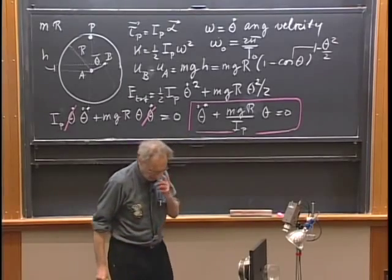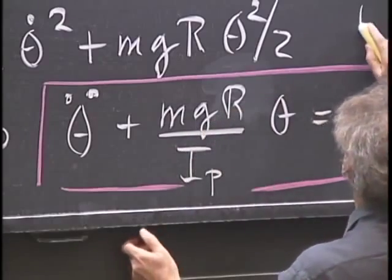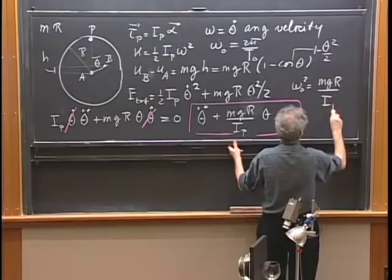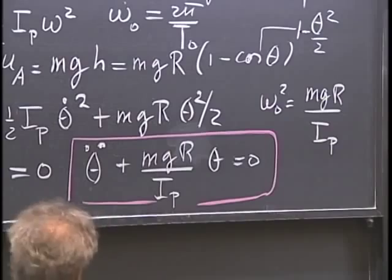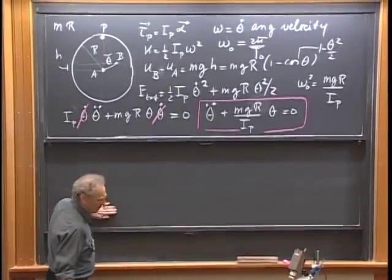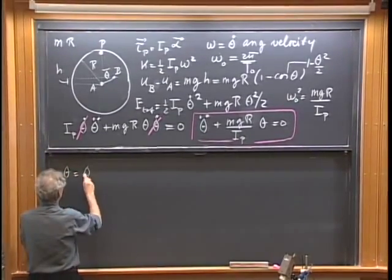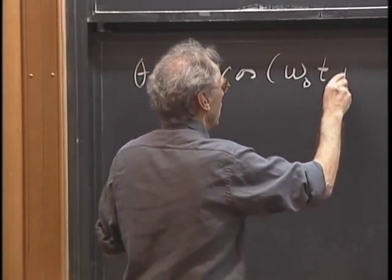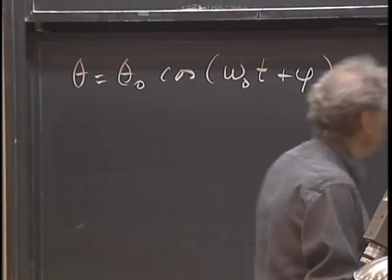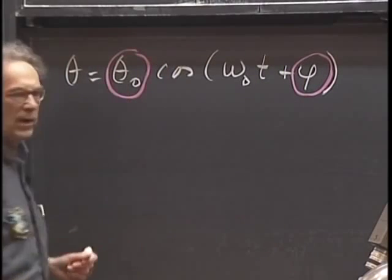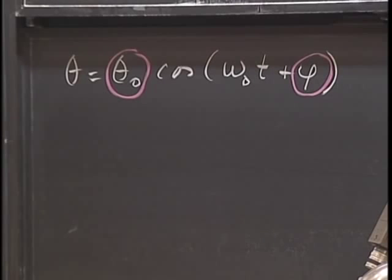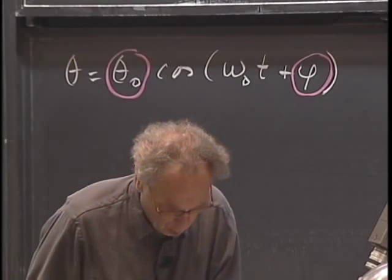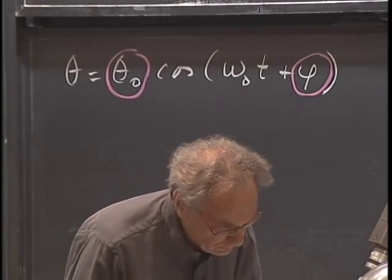This differential equation you should recognize. The solution is immediately obvious. Omega zero squared equals MGR divided by I_P. So the general solution for this oscillation becomes theta equals theta zero — the amplitude — times cosine of (omega zero t plus some phase angle phi). That is the general solution. If you know the initial conditions — the angular velocity and position at t equals zero — you can solve for theta zero and phi. But omega zero is independent of the initial conditions.